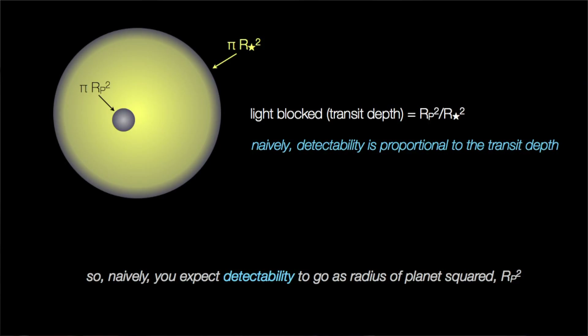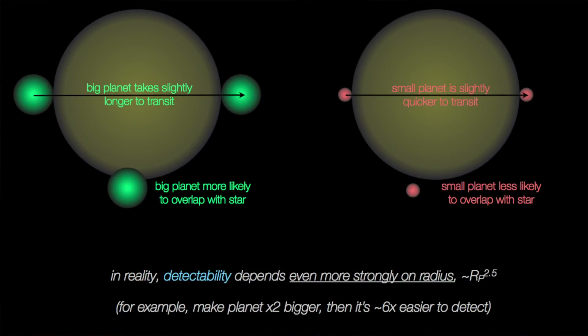There's another detection bias too, which is really interesting. We know that we're more likely to see a big planet transiting in front of a star than a small planet, just because a big planet blocks more light, so its transit is easier to see. Until recently, we assumed that this bias towards big planets would be proportional to the area of the planet relative to the area of the star — which makes sense, because that's the area being covered during the transit. However, when you take into account that we're more likely to see bigger planets transiting and that longer transits are easier to see than shorter ones, it turns out we're even more biased against detecting small planets than we originally thought. If you decrease the size of a planet, there's an outsized decrease in the probability that you'll be able to detect it.